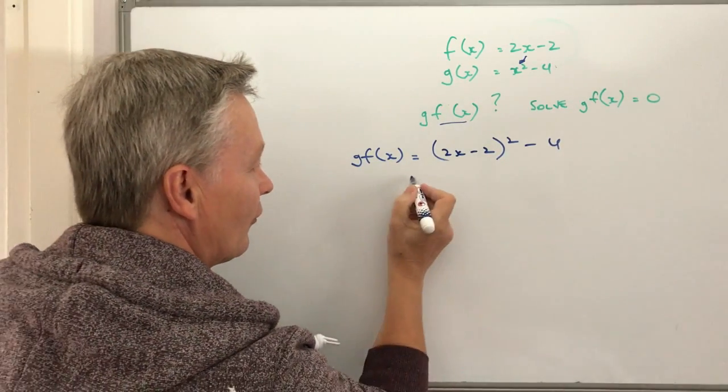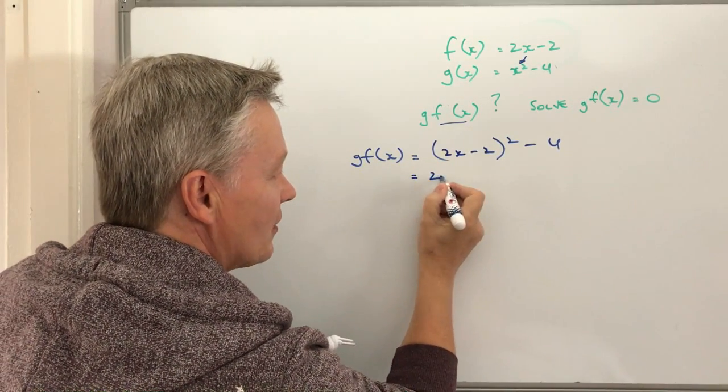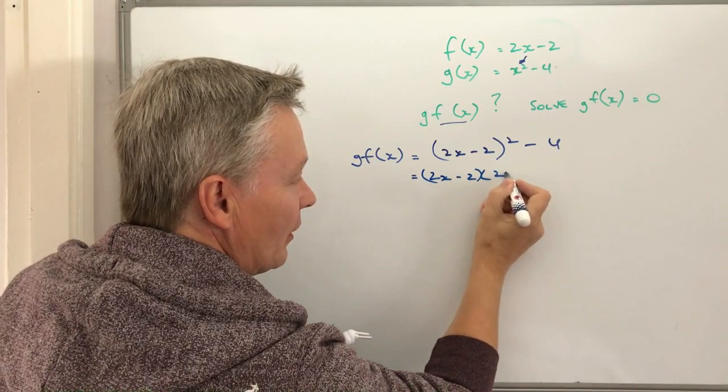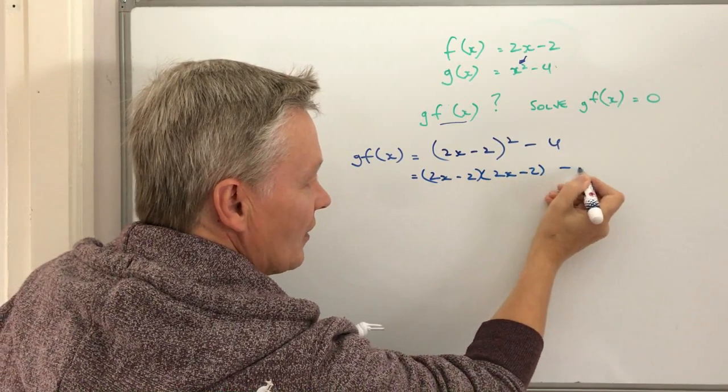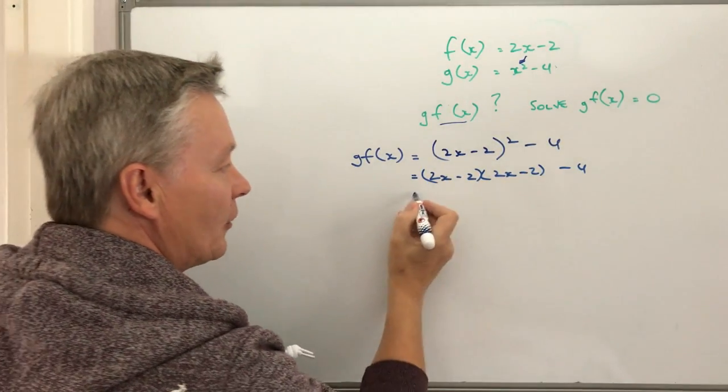Okay, so let's just work through that. So I've got 2x minus 2 squared is going to be that, and that's going to be minus 4 at the end.